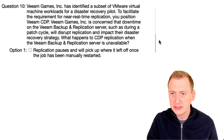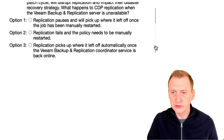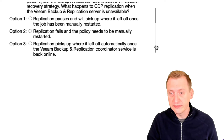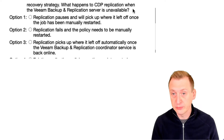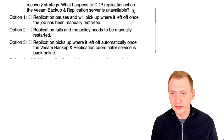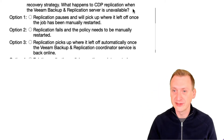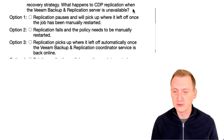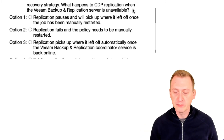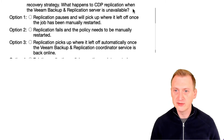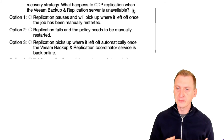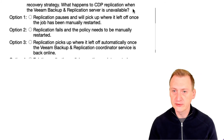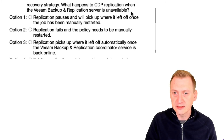What happens to CDP replication when the backup and replication server is unavailable? Now, if you are not so familiar with CDP, I would strongly recommend pausing the video, looking it up in the user guide, and then coming back to understand what it is and which components are involved. Basically, we have CDP proxies deployed on the source and on the target, and it works with policies. These policies are created on the backup server and then pushed out to the proxies, so they're not actually using the backup server during replication.